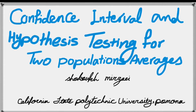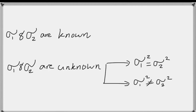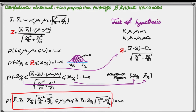Hello everyone, this is Mirzai from Cal Poly Pomona. In this lesson we're going to talk about confidence interval and hypothesis testing for two populations. In the previous lesson, we said depending on whether the population variances are known or not known, we're going to have different methods. We started with when sigma1 and sigma2 are given, then we developed a two-sided confidence interval and hypothesis testing method for the difference between two population averages when the variances are known.